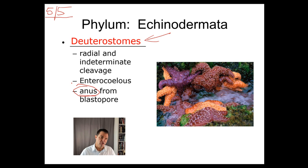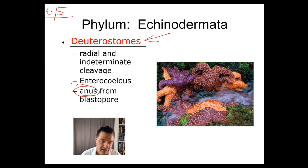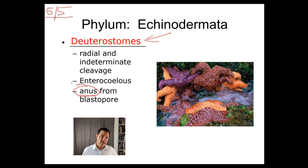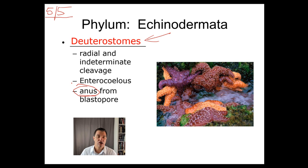We talk about these developmental characteristics because development is a very key, important characteristic in classifying and identifying organisms. When you make changes in development early on, those changes have larger effects on the organism as a whole going forward. There's a famous biologist, Ernest Haeckel, with the famous phrase 'ontogeny recapitulates phylogeny,' essentially meaning that if you look at the developmental pattern of an animal, it kind of shows you how it might be related to other animals. So we have our deuterostomes.